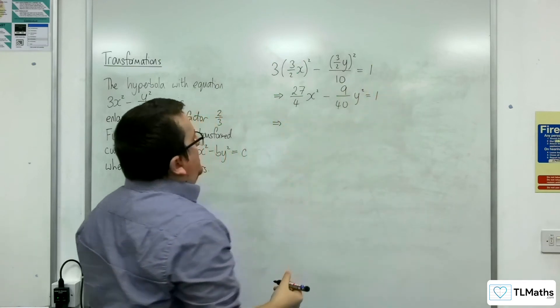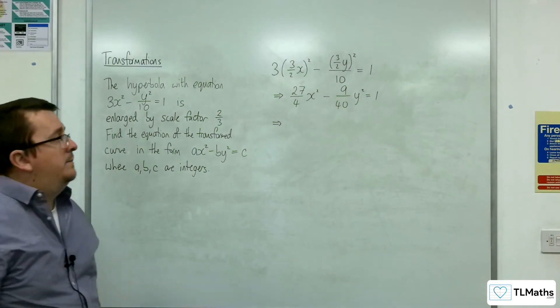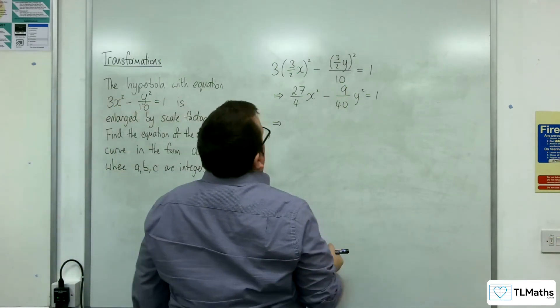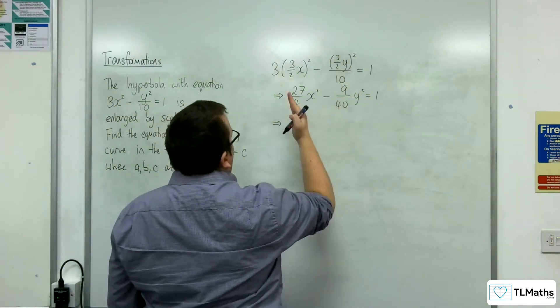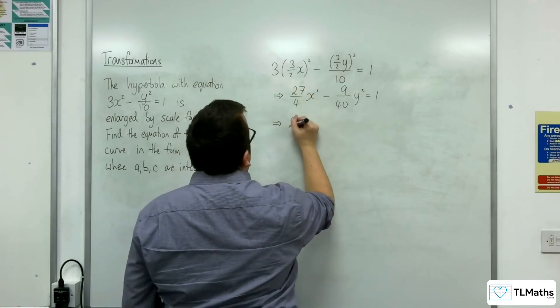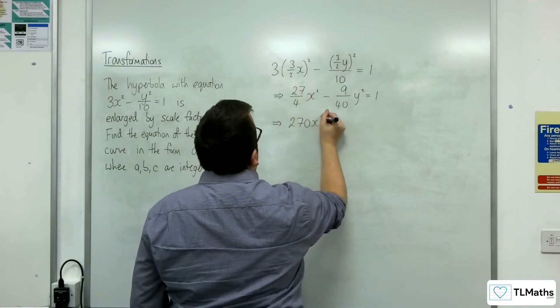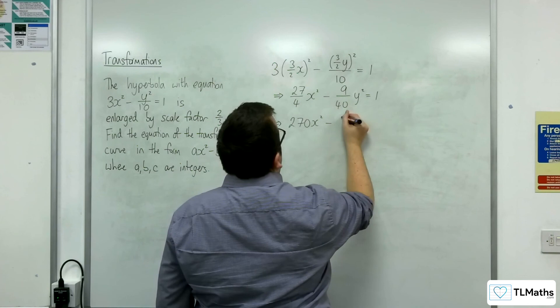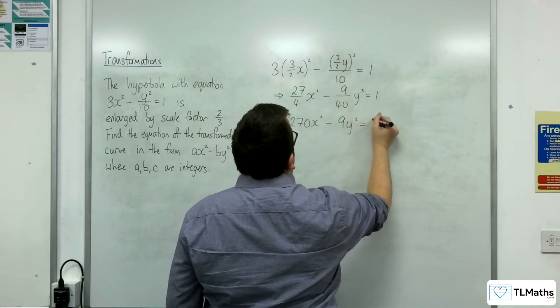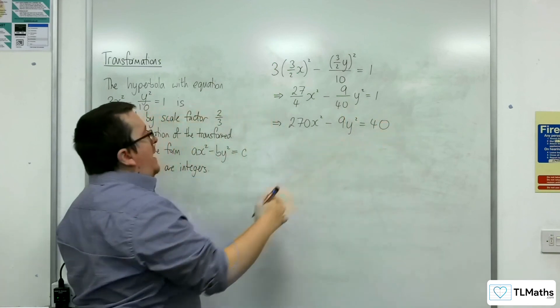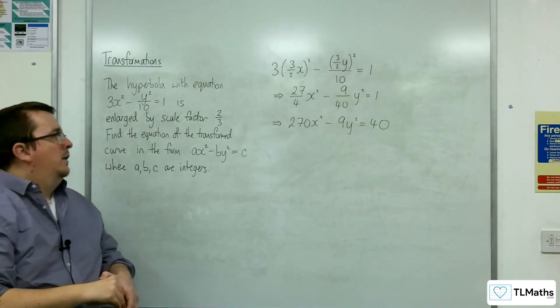So I now need to multiply through by 40. So multiplying through by 40 it's going to knock out the 4 and I'm going to get 270x squared take away 9y squared is equal to 40. And that is now in the correct form that I wanted.